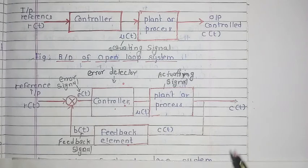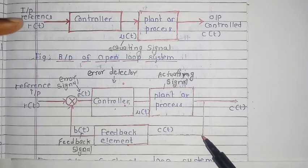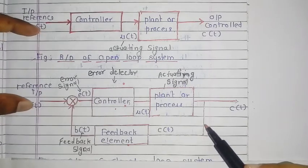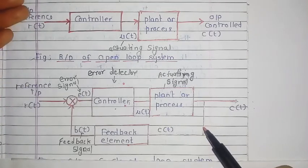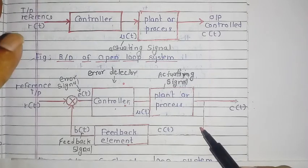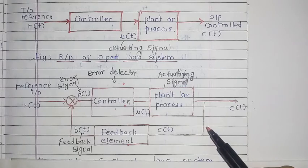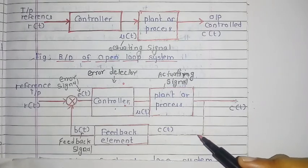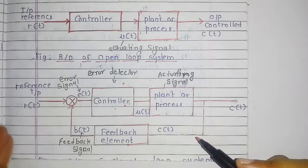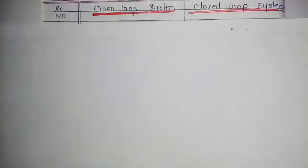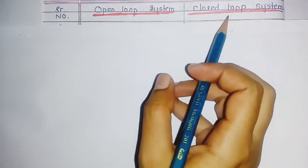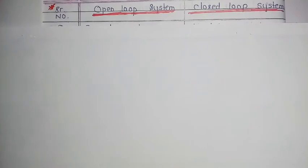We will now see the comparison of the open loop system and the closed loop system, covering properties such as bandwidth, stability, and cost. This comparison is a very important question in exams — you can write it as a comparison or use the points to explain individual systems one by one.